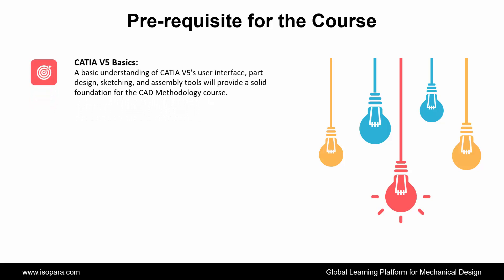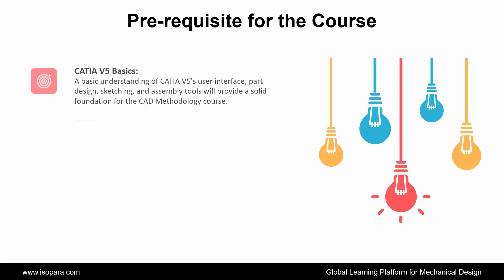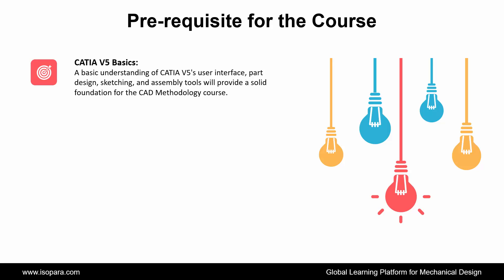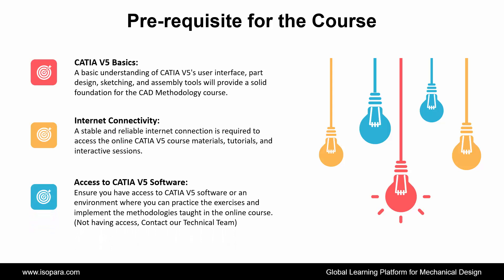Now we see what prerequisites are required for this course. First, CATIA basics: a basic understanding of CATIA user interface, part design, sketching, and assembly tools will provide a solid foundation. Second, internet connectivity: a stable and reliable internet connection is required to access the online CATIA course materials, tutorials, and interactive sessions. Third, access to CATIA software: ensure you have access to CATIA software or an environment where you can practice the exercises and implement the methodologies taught in the course.